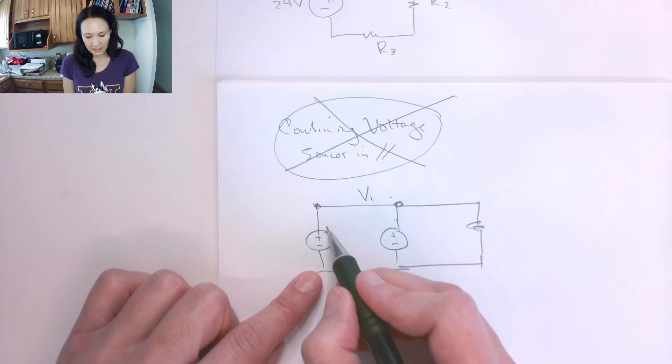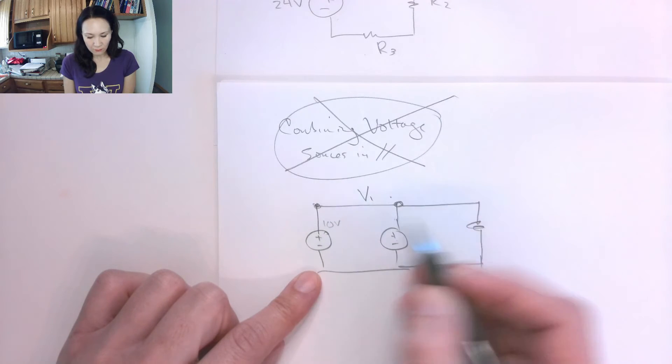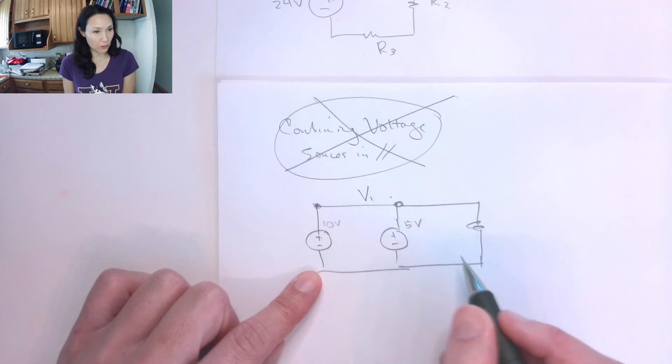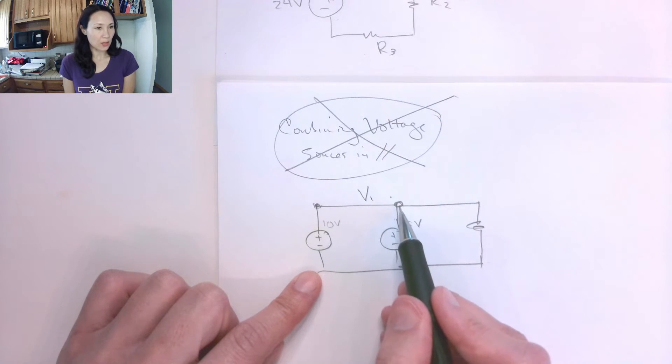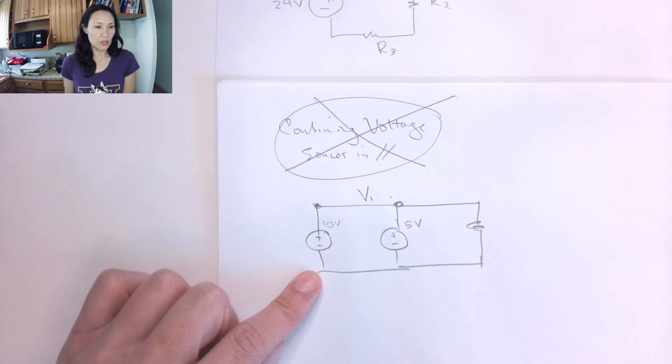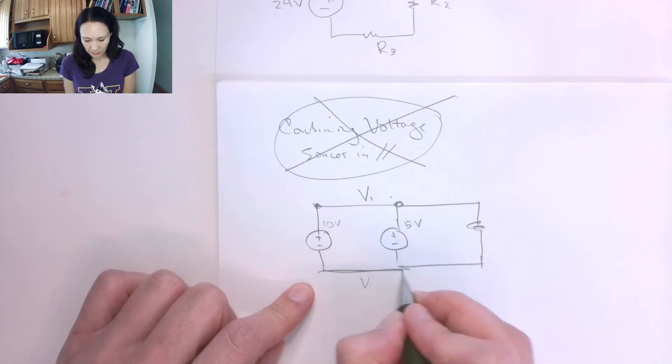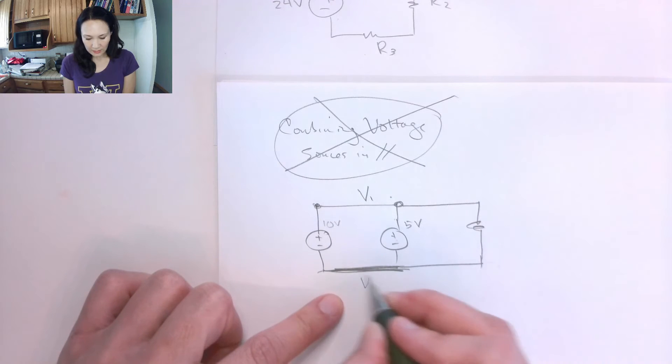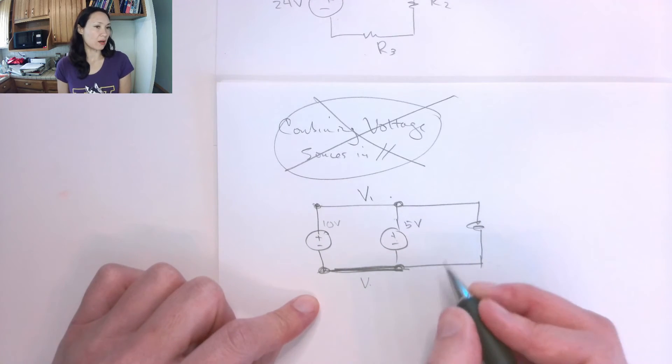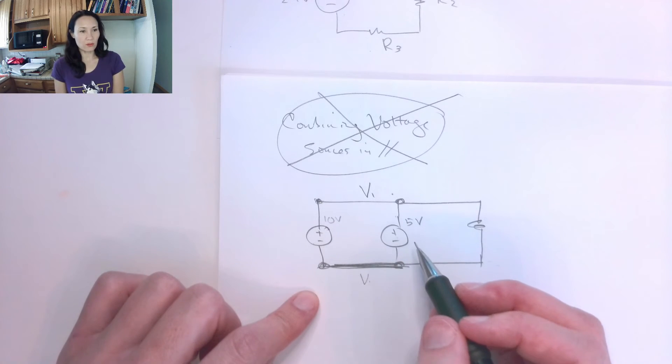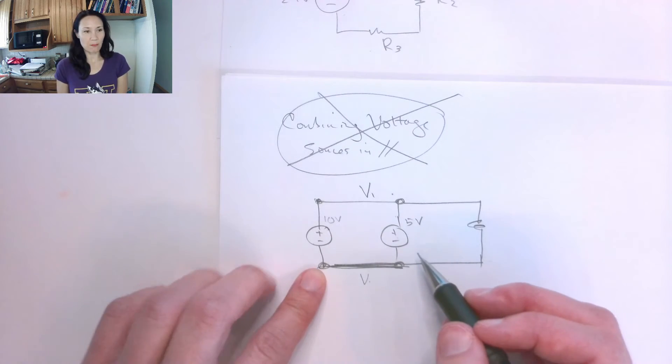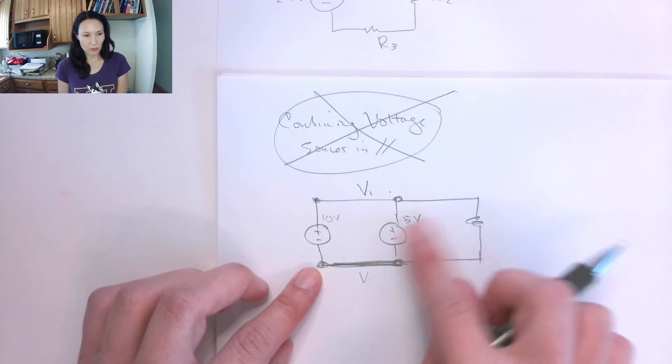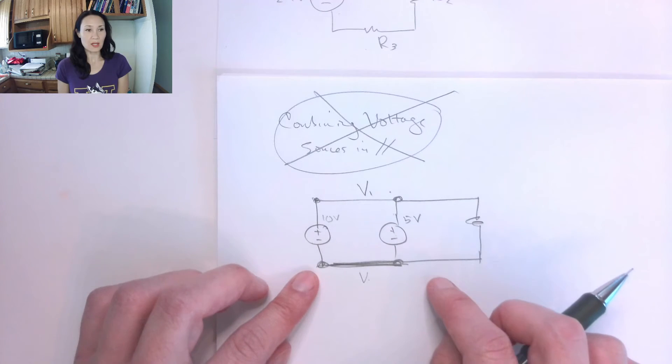So it doesn't make sense for, say, this to be like a 10-volt source and for this to be a 5-volt source, because the value here should be the same voltage. And same story here, down here at ground, we should expect the voltage here to be the same as the voltage here. Okay, so putting different voltage sources together like this in parallel is actually going to violate our laws for circuit analysis.